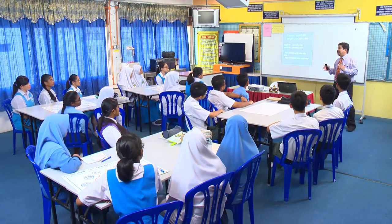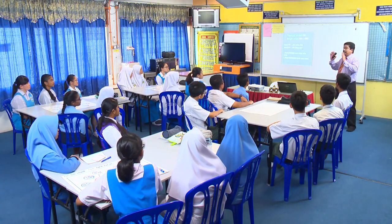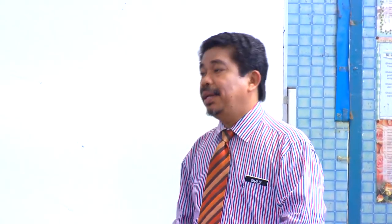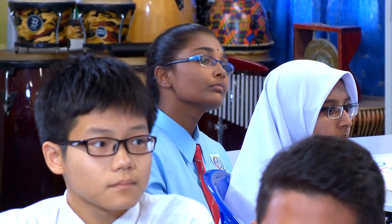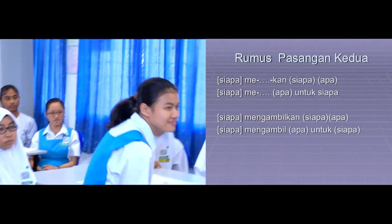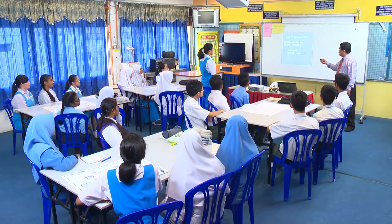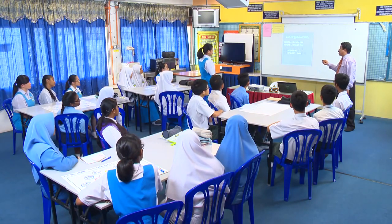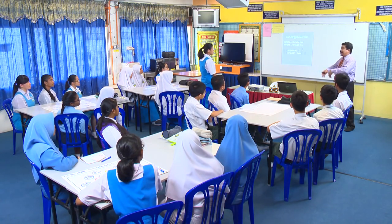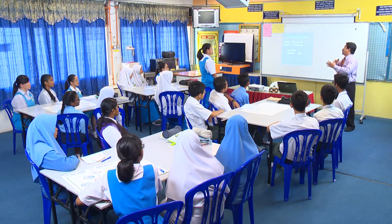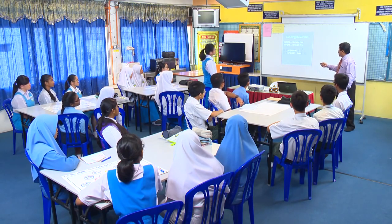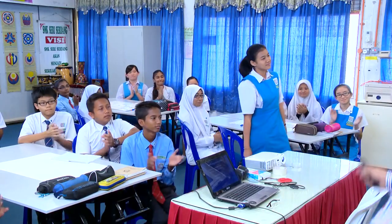Kamu mestilah dapat membezakan antara pasangan me-i dengan me-kan, dan pasangan me dengan me-kan. Wanzin membina ayat: Saya mengambilkan kakak buku latihan - maknanya Wanzin ambil buku latihan untuk kakaknya. Kalau mengambil: Saya mengambil buku latihan untuk kakak. Bagus, Wanzin.